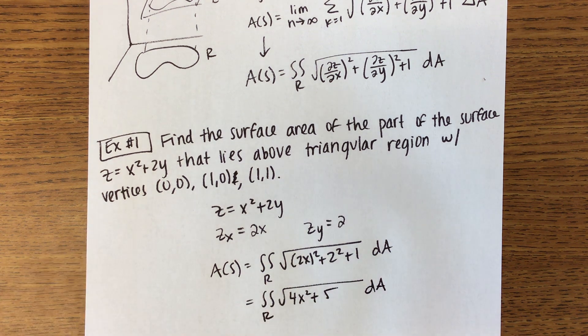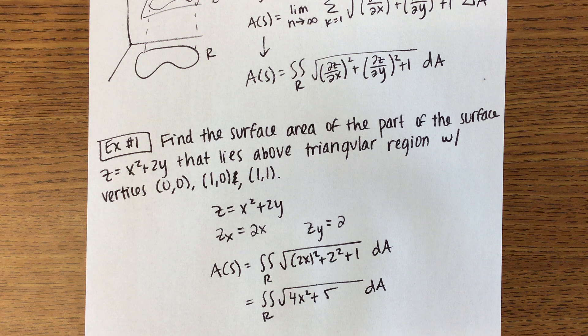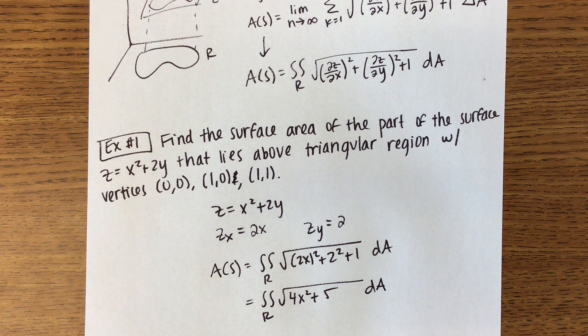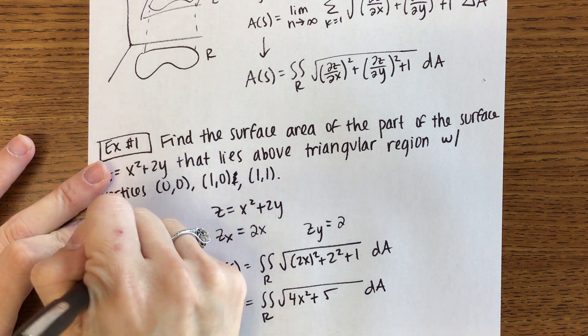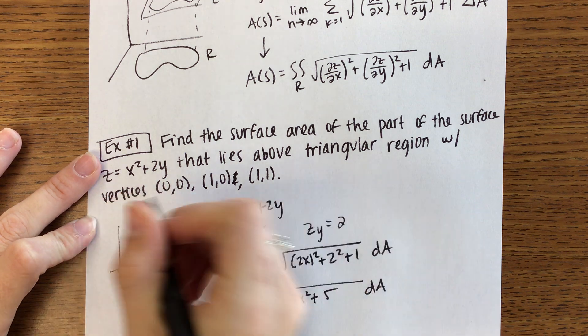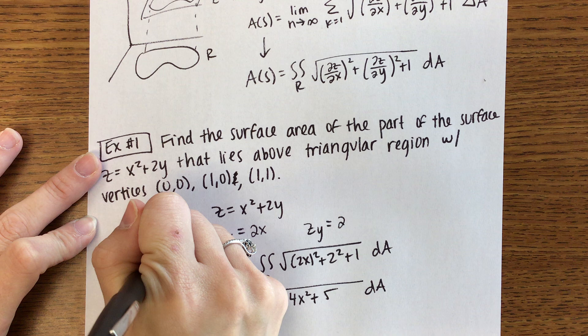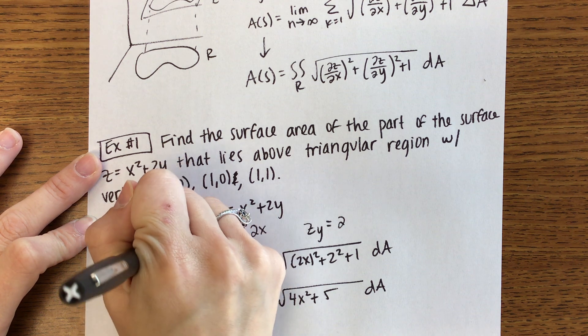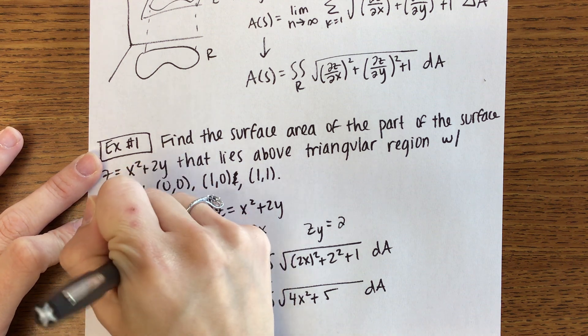I don't think your book uses an R. I think they use a D, but it's the same. Okay, we're going to have to write or draw out that region R then to figure out what our bounds are. So it's a triangular region with a vertex at (0,0), a vertex at (1,0) and a vertex at (1,1), which would be this then.